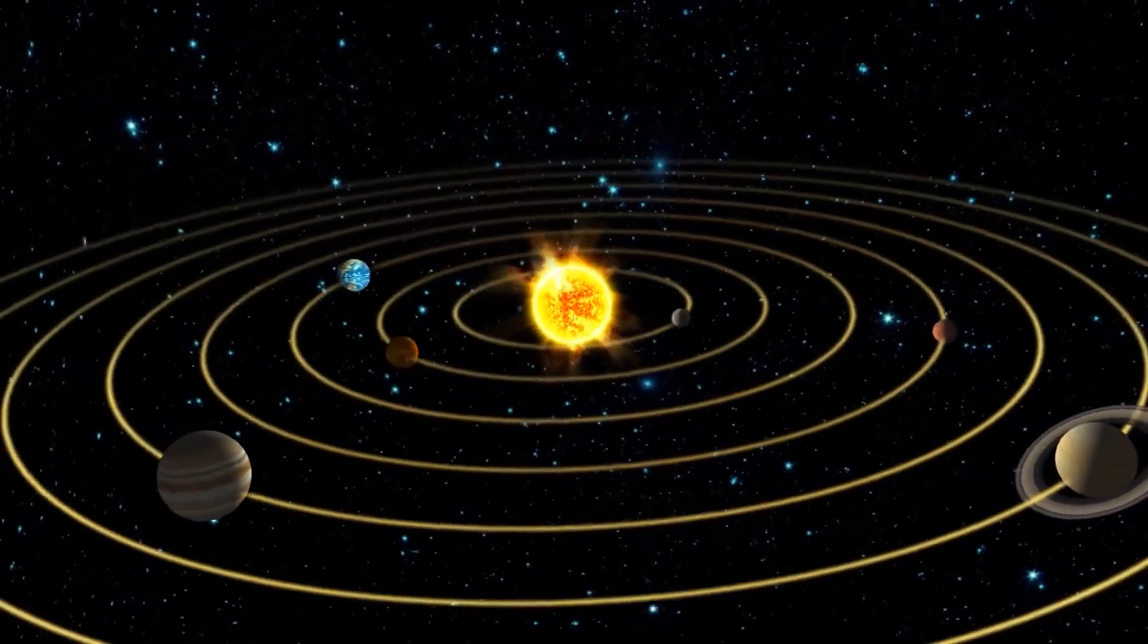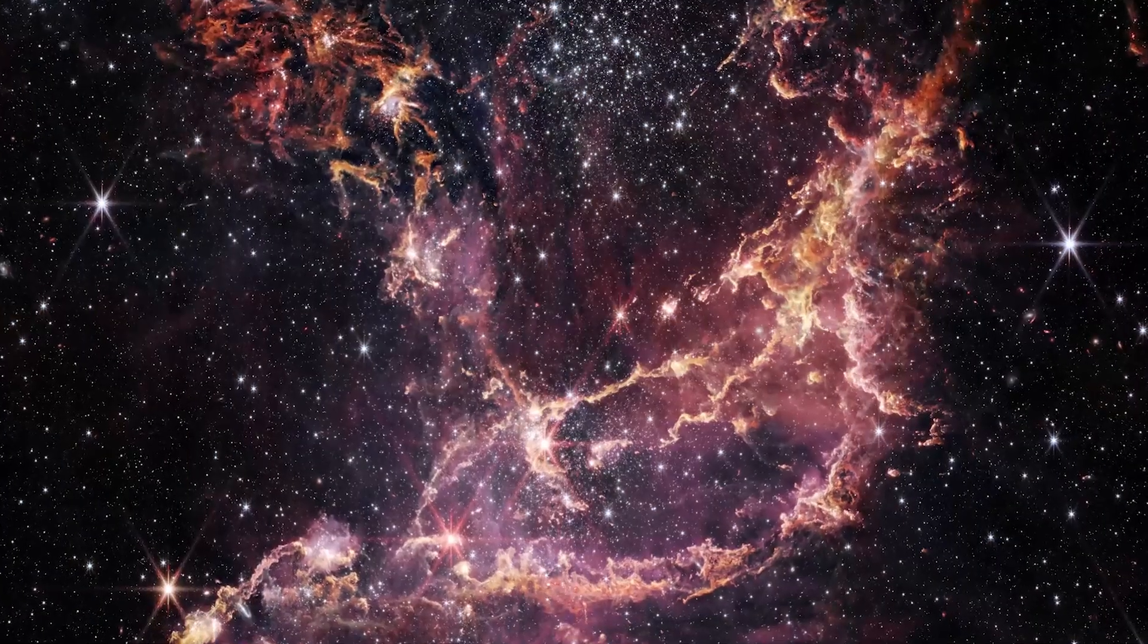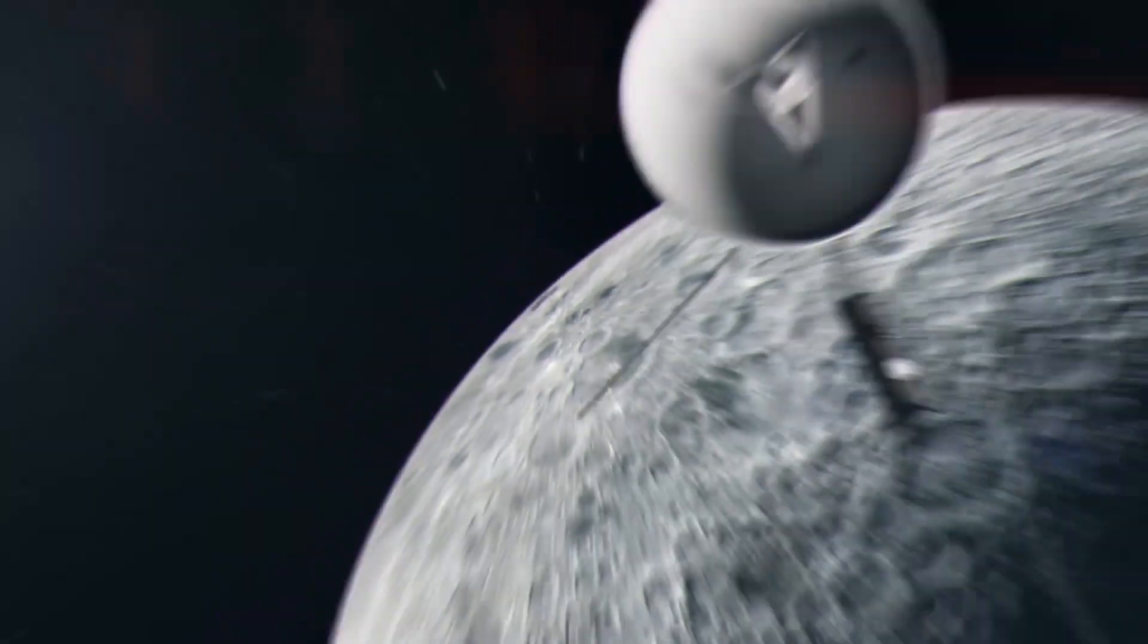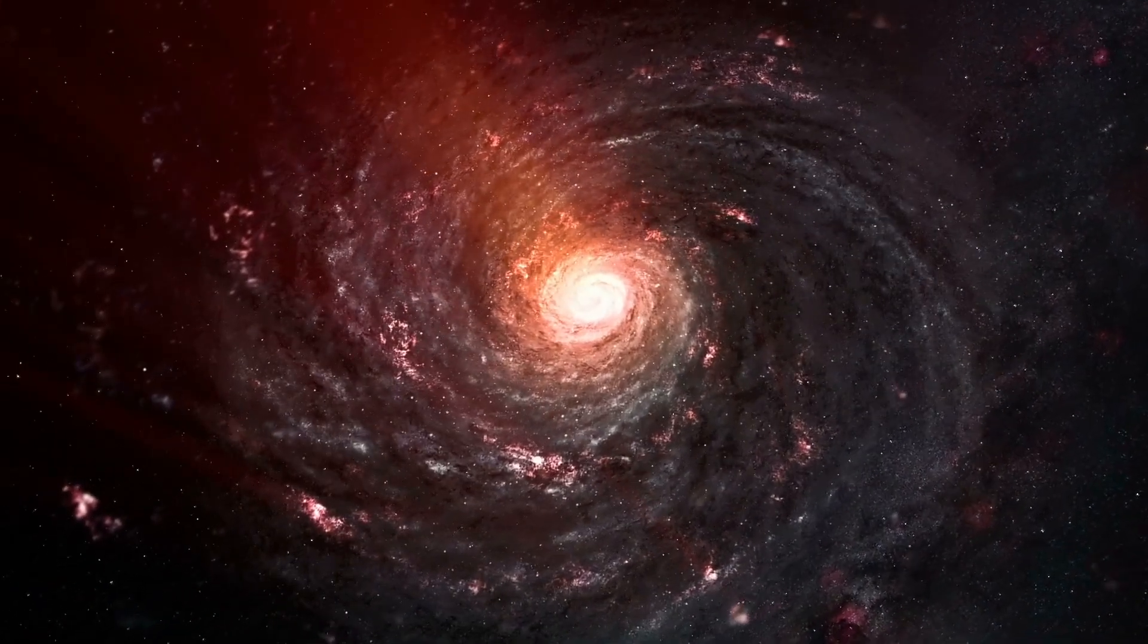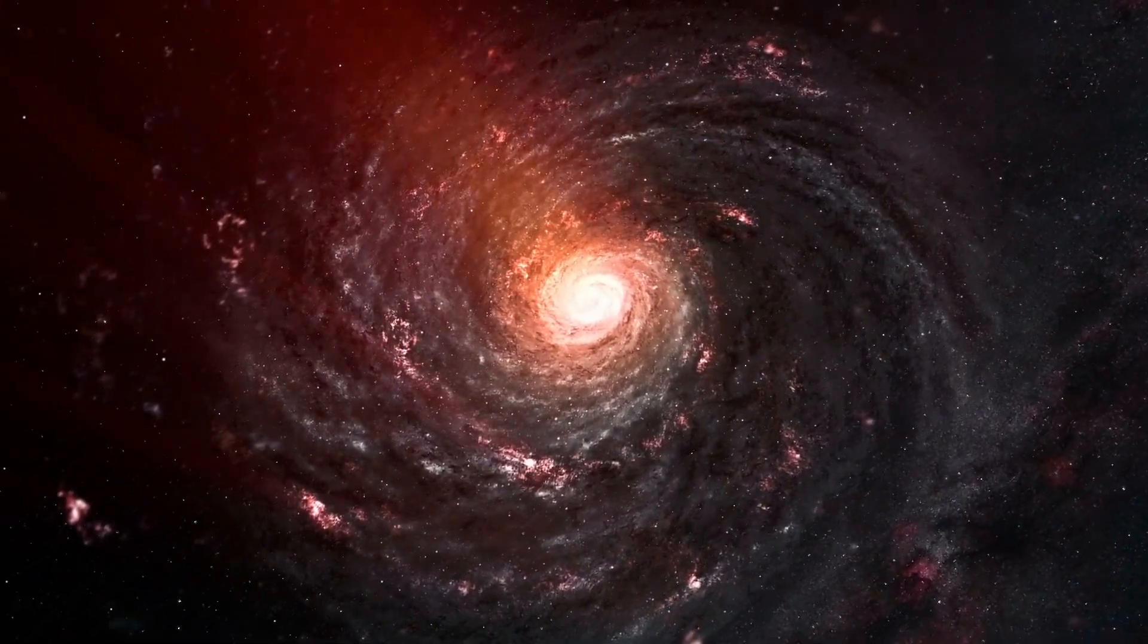The universe is enormous, and our solar system is only a tiny part of it. The breadth of the initial photos from James Webb and the interstellar travels of Voyager 1 and 2 show that the universe is vast beyond the solar system.